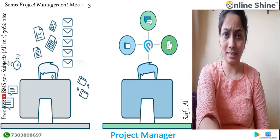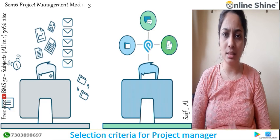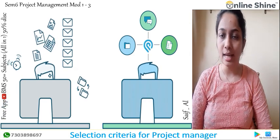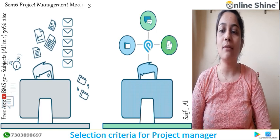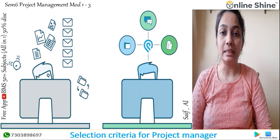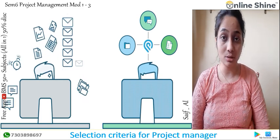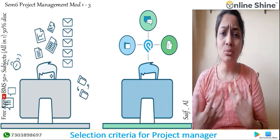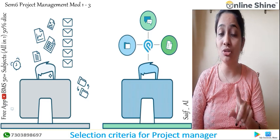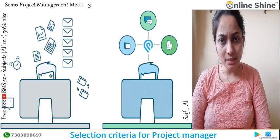There are certain selection criteria for a project manager — how exactly do you select one? The very first criterion is he should have good communication. Then you have integrity, meaning honesty — how honest he is with his work. He should also be energetic at all times, because if he is not energetic his team won't be energetic either.